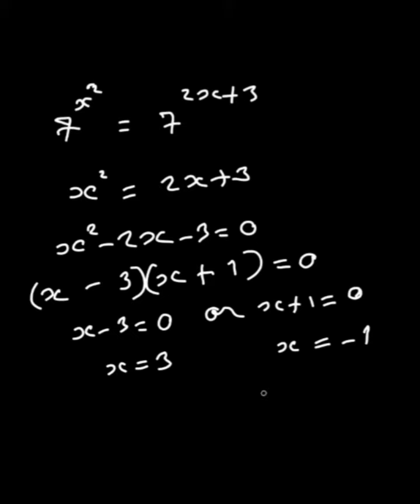That means if x is a solution of the original equation, then x must be either 3 or minus 1. That means that no number other than 3 and negative 1 can be the solution.